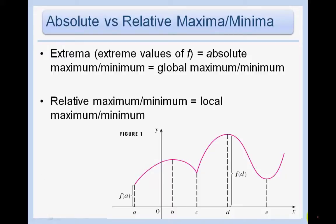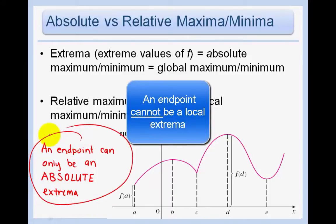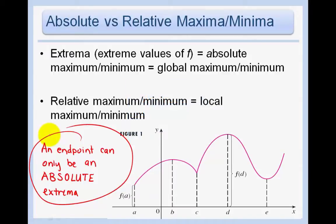That is not to be confused with the relative maximum or minimum, also called a local maximum or minimum. It's very important to note that an endpoint can only be an absolute extrema. An endpoint cannot be a local extrema, because a local maximum requires consideration from both sides. So only endpoints can be absolute min's or max's.